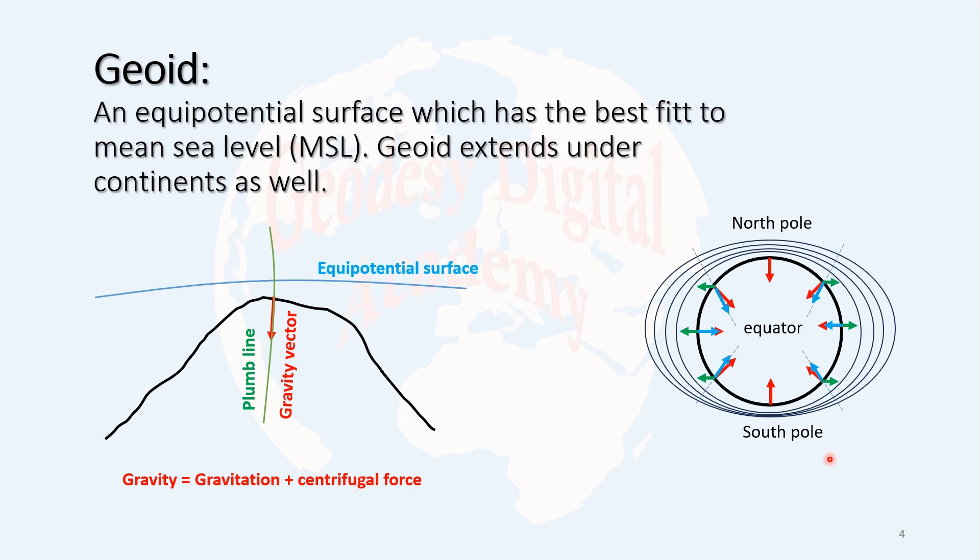Where is the lowest equipotential surface on Earth? It's mean sea level. If you consider the geoid, which has the best fit to mean sea level, it extends under the continents as well. This is the lowest potential, the lowest height. This is why we consider the geoid as the vertical datum, or the zero value for heights.